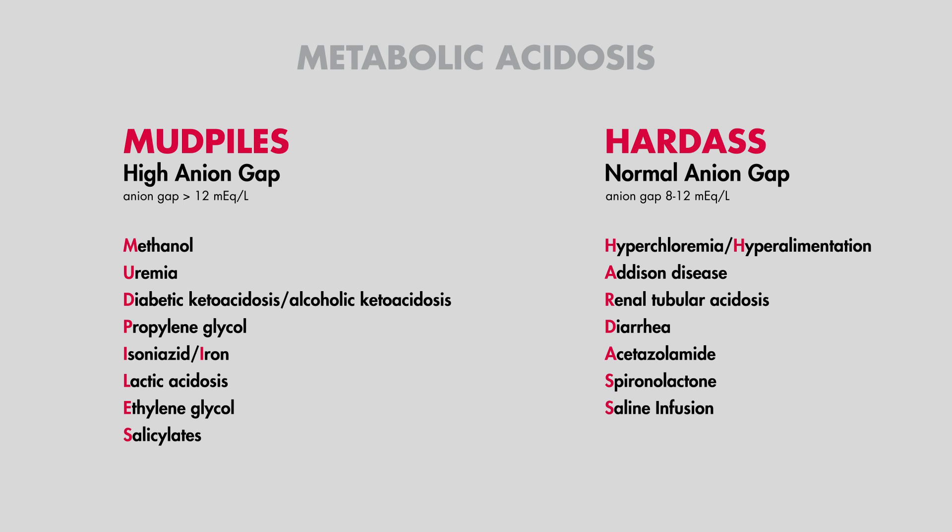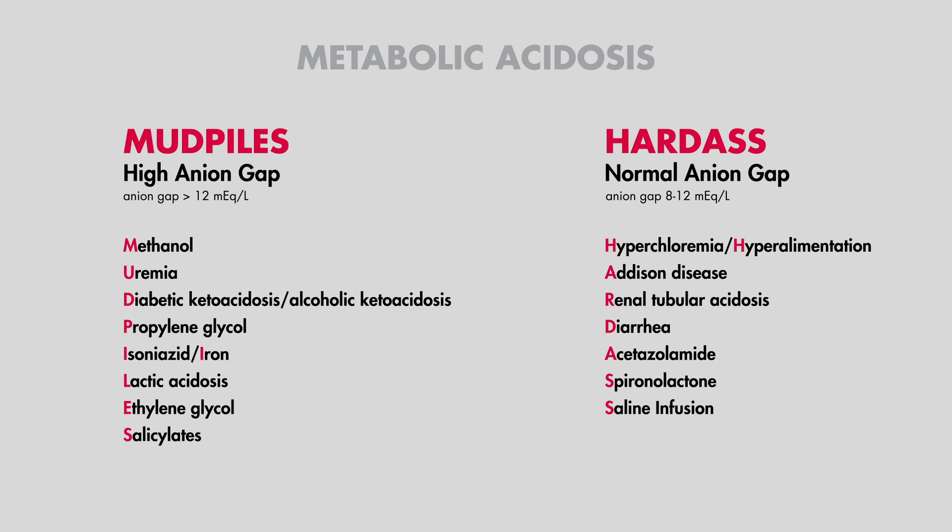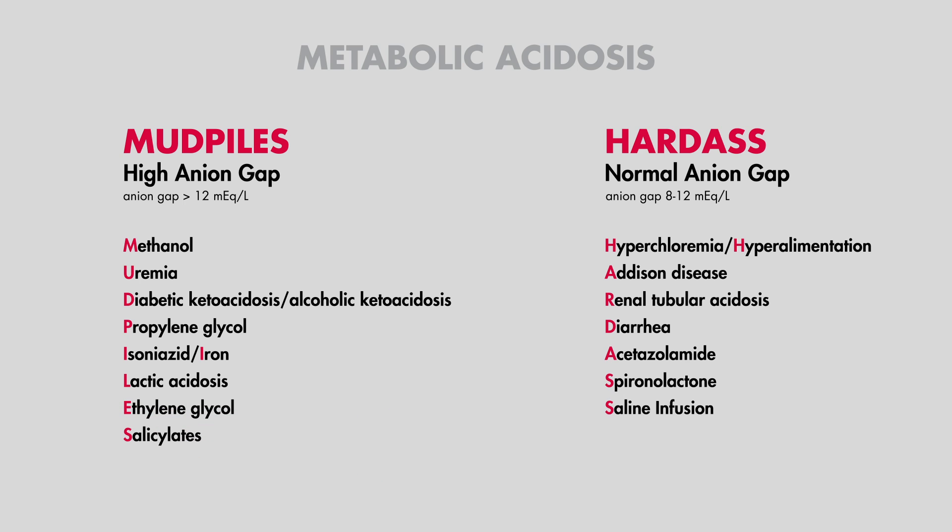Those are the mnemonics that help remember the causes of metabolic acidosis. If you have another trick or used other ones in the past, leave them in the comments below — I'd love to see what you came up with.